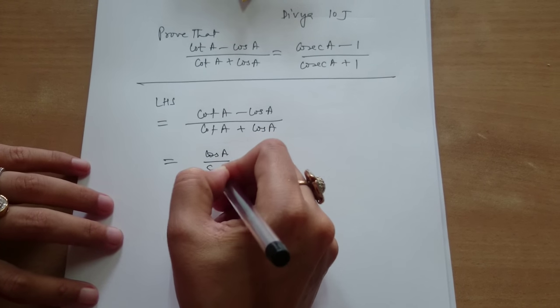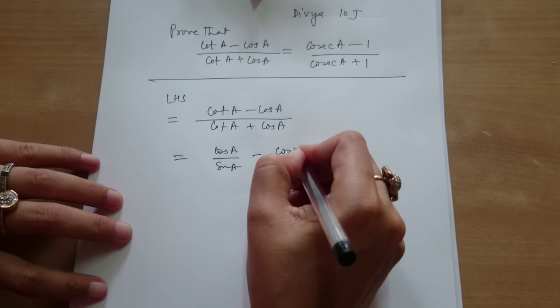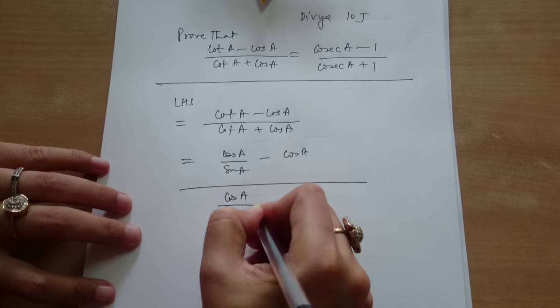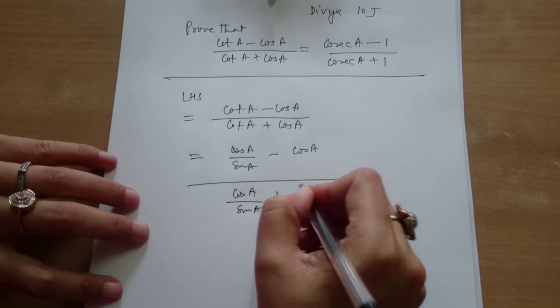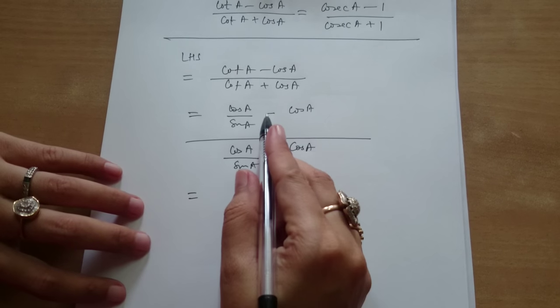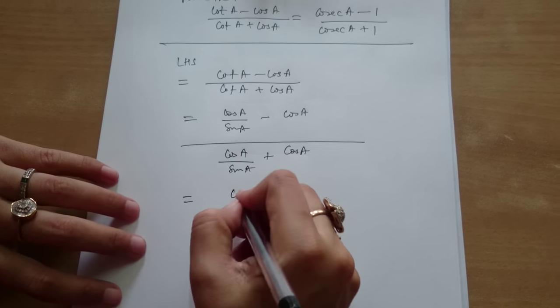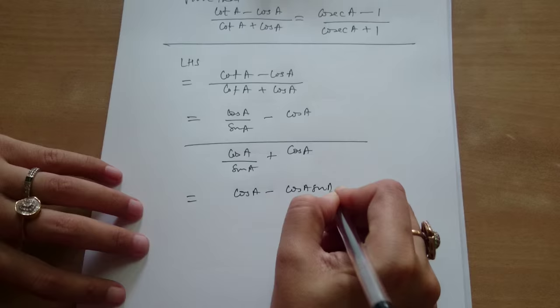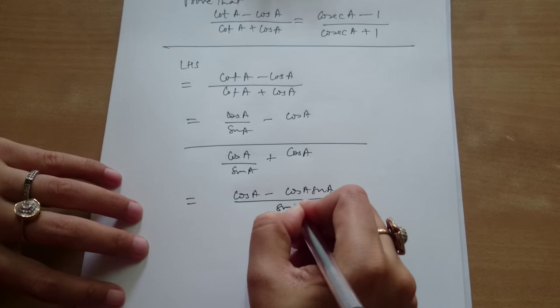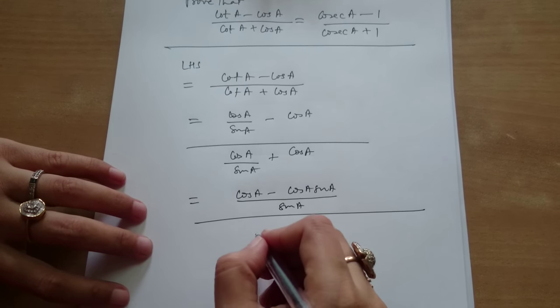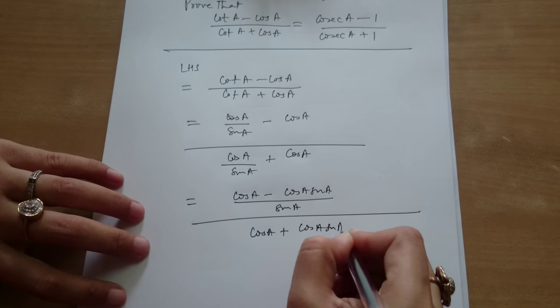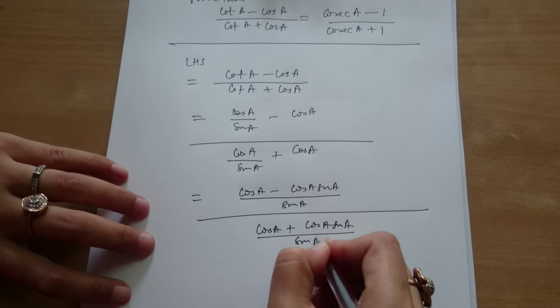So, cos A upon sine A minus cos A in the numerator and in the denominator, cos A upon sine A plus cos A. Which is equal to... You take the LCM. Cos A minus cos A sine A divided by sine A, whole divided by cos A plus cos A sine A divided by sine A.